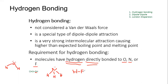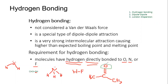If the hydrogen is not directly attached, it cannot have hydrogen bonding. For example, in this Lewis structure here, we have hydrogens and oxygens, but the hydrogen is not directly attached to the oxygen — so therefore this would not have hydrogen bonding. Again, the hydrogen has to be directly attached to the oxygen, nitrogen, or fluorine.